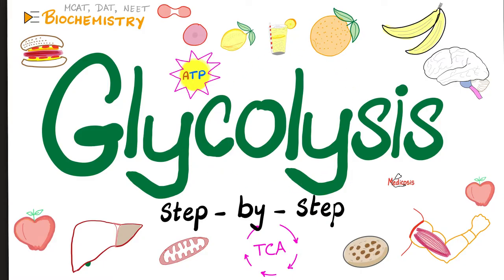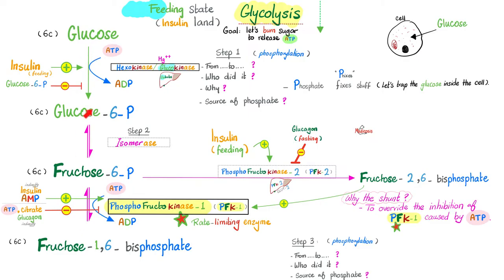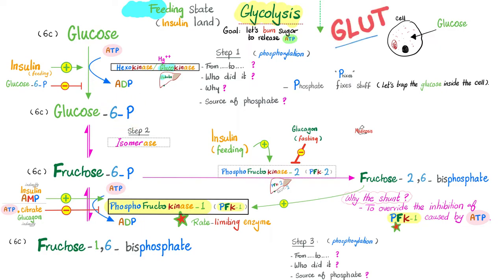Glycolysis is converting glucose to pyruvate — not just one step, but many steps. Glucose enters the cell, and to prevent it from leaving again, it must be fixed inside. How? By phosphorylating it. Phosphorylation fixes glucose inside the cell because the cell membrane transporter — called GLUT, the glucose transporter — can recognize glucose and open, but it cannot recognize glucose-6-phosphate, so the door will not open.